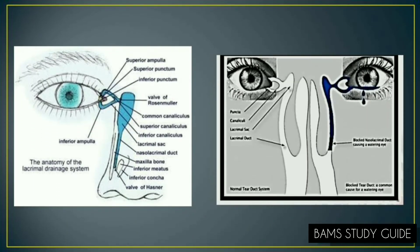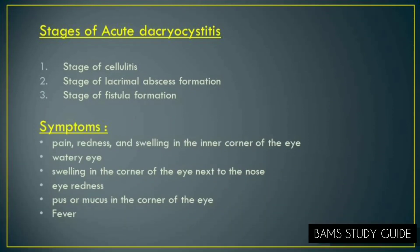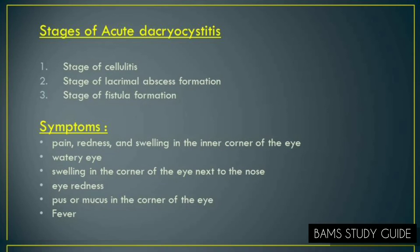Acute Dacryocystitis is an acute suppurative inflammation of the lacrimal sac characterized by painful swelling in the region of the sac. It may occur in the age group between 40 and 60 years, mostly in females. Low socioeconomic status and poor personal hygiene also play an important role. Anatomical factors, mild inflammation in the lacrimal sac, obstruction to the nasolacrimal duct, or foreign bodies can cause stasis of tears in the lacrimal sac. Causative organisms may be Staphylococcus aureus and Streptococcus pneumoniae.